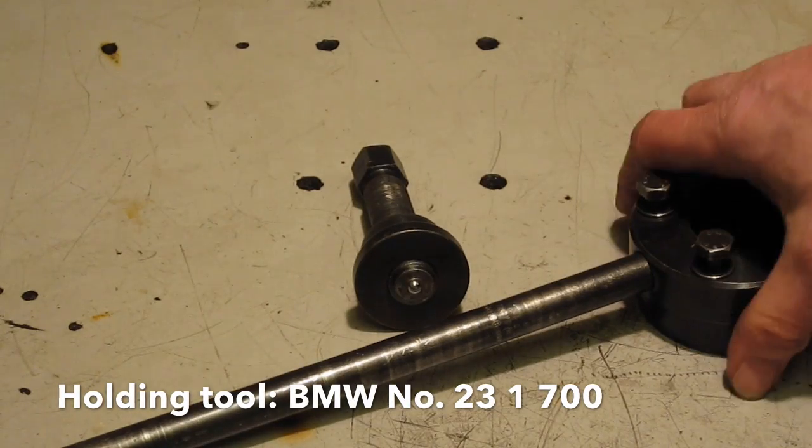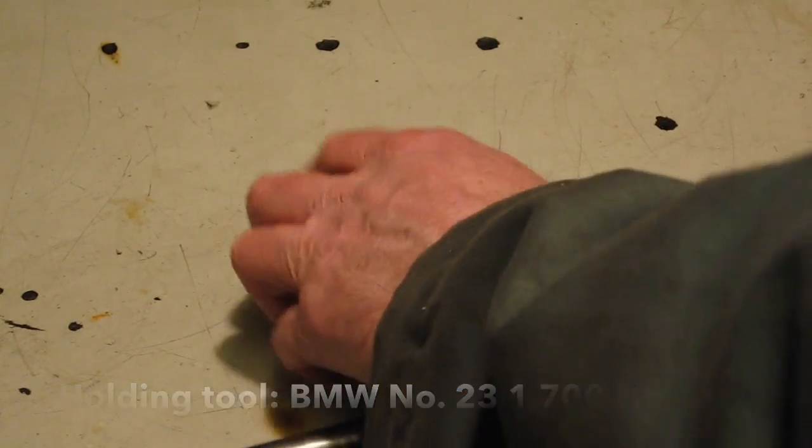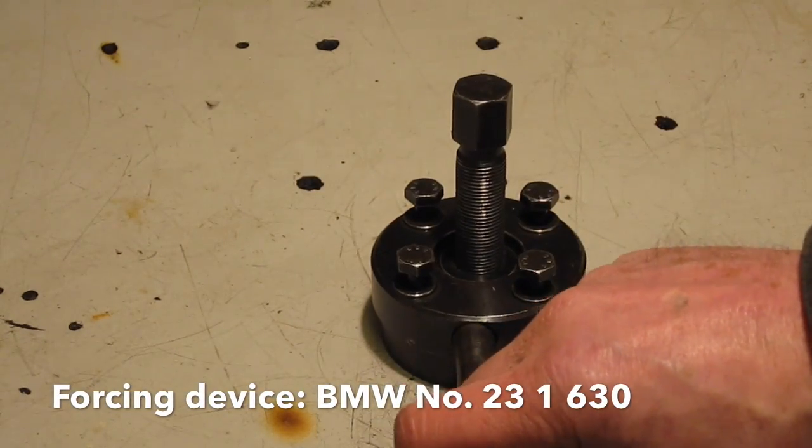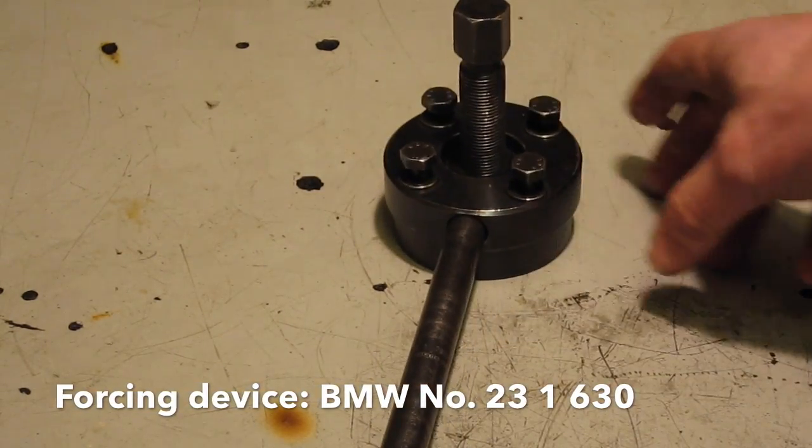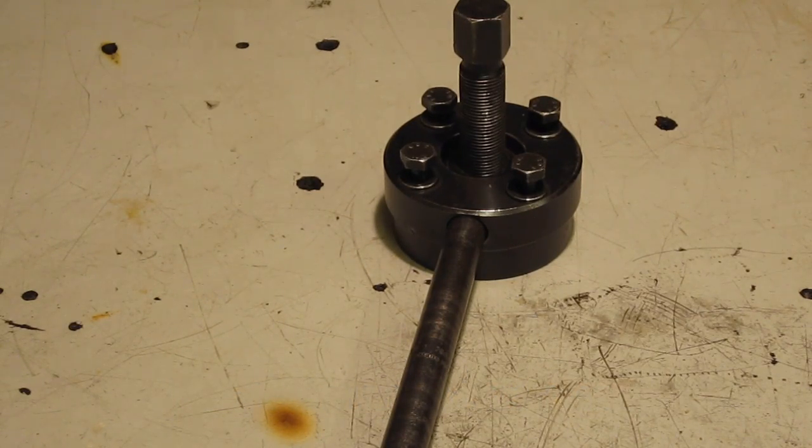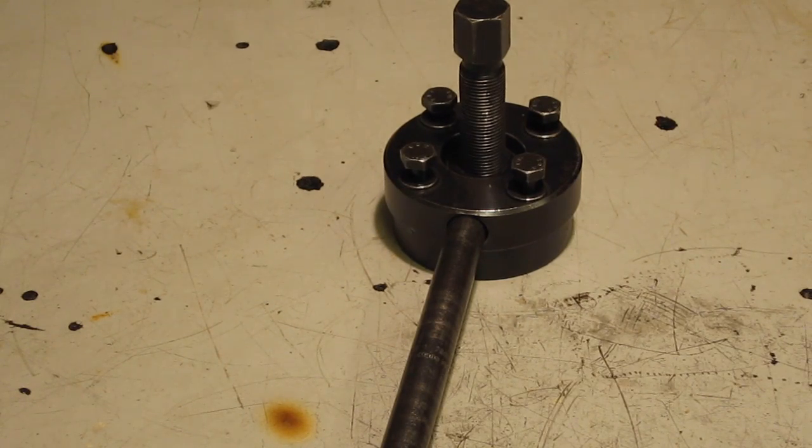Once the nut's undone, you take this tool off, and then this part fits in. You can pull the flange by screwing the center bolt down while holding the flange, and that should pop the flange off the shaft. They can be extremely tight on the taper, so you do need a decent tool.